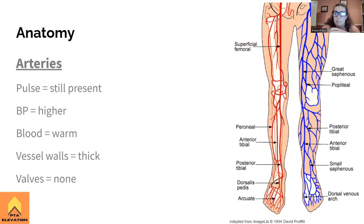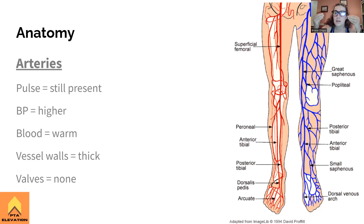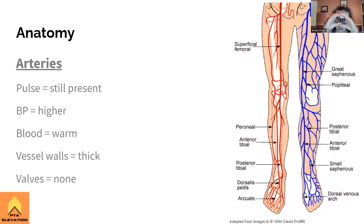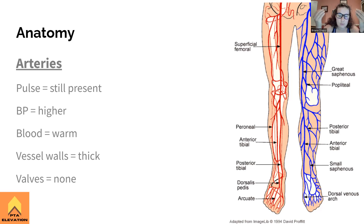Blood in arteries should be warm because it's just come from the heart and the skin stays warm as blood flows down. So when examining, especially along the lateral side of the foot and ankle, that skin should still be warm if nothing is wrong. The vessel walls of arteries should be thick, the lumen should allow easy flow with no resistance. Remember, arteries do not have valves.